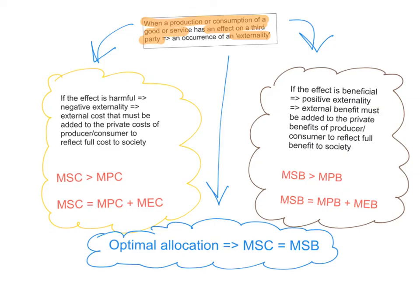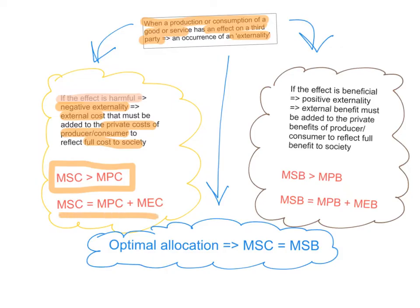Externalities can be positive externalities or negative externalities. If the effect on the third party is harmful we say that this is a negative externality. This is an external cost that must be added to the private costs of the producer or the consumer to reflect the full cost to society. In the case of negative externalities, marginal social cost is higher than the marginal private cost, because marginal social cost is equal to marginal private cost plus marginal external cost.